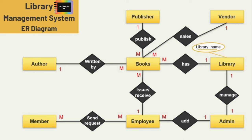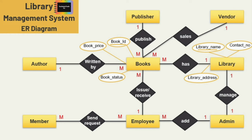For library: library name, address, and contact number — and library name is the key attribute. Next, the entity books: I am adding three attributes — book ID, book price, and book status. Book status is to check whether a book is available or not, and book ID is the key attribute. Next is the entity admin: I am adding three attributes — admin ID, admin name, and contact number — and admin ID is the key attribute.